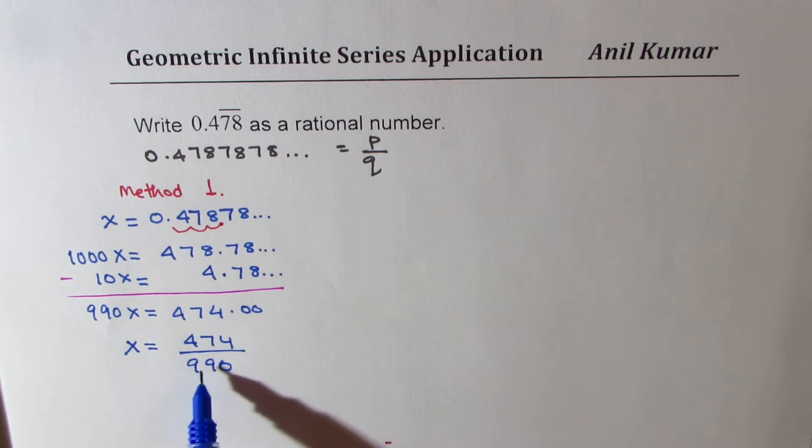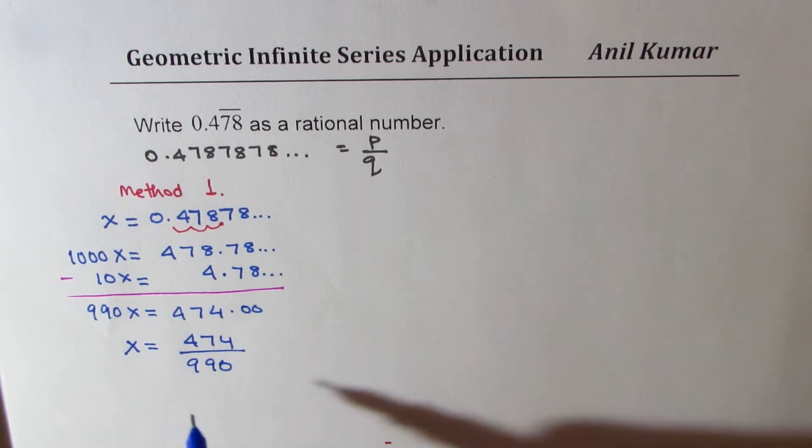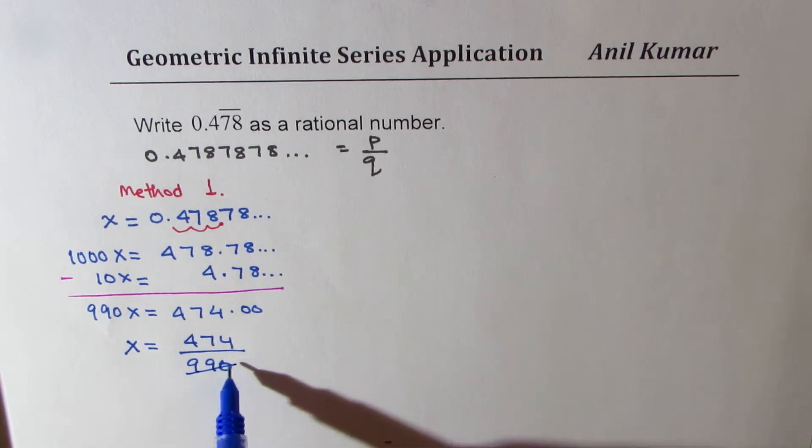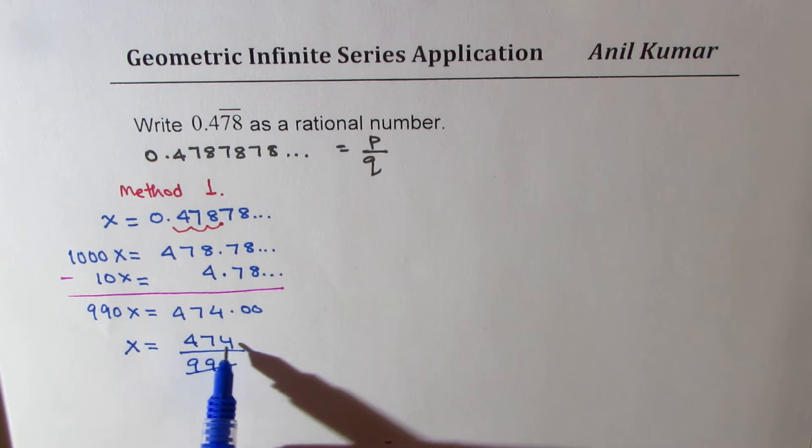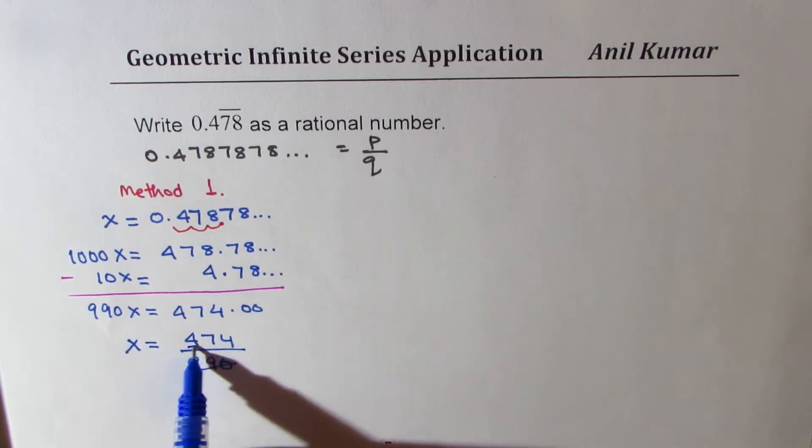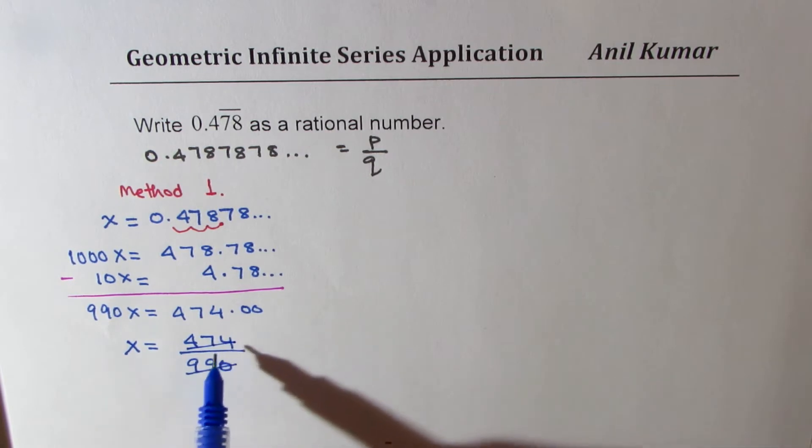We could divide by 2 and 3. Let's simplify. If I divide by 6, because 7 plus 4 is 11, 11 plus 4 is 15, so it could be divided by 3, and this could be divided by 2.